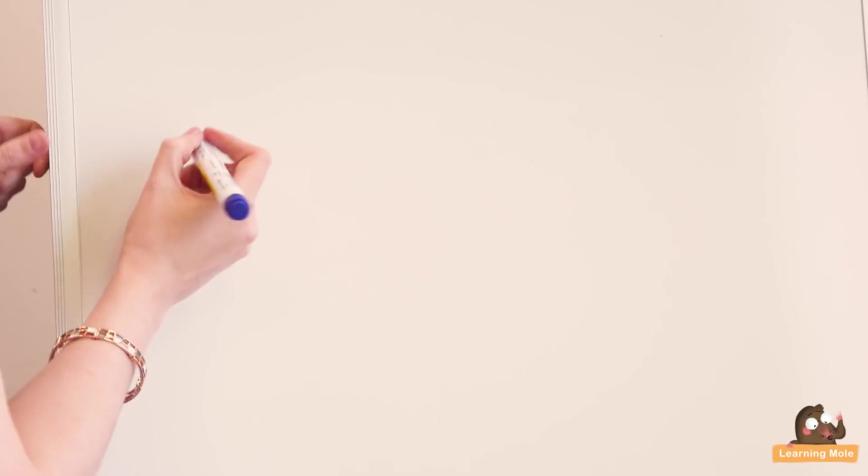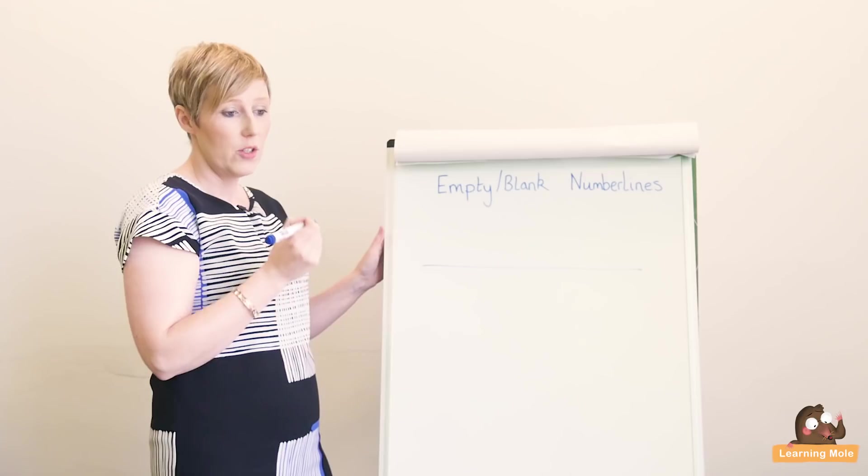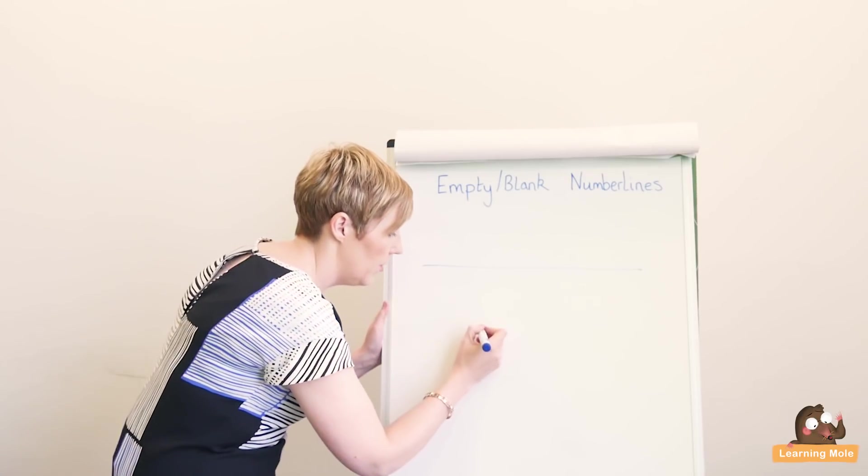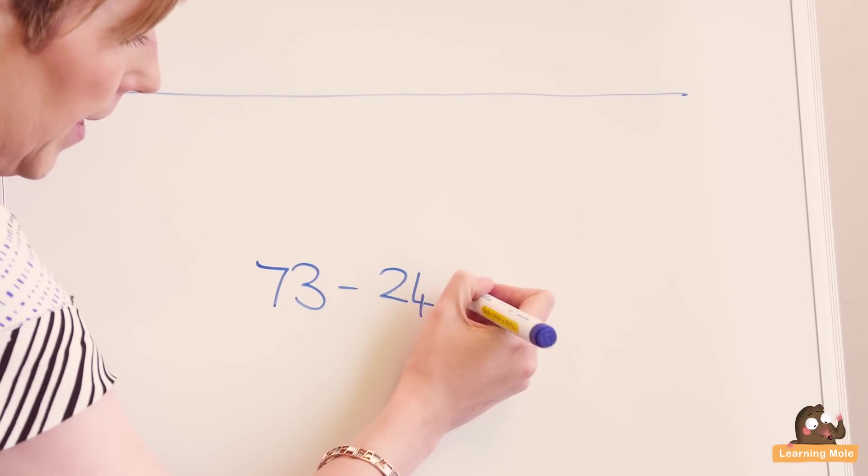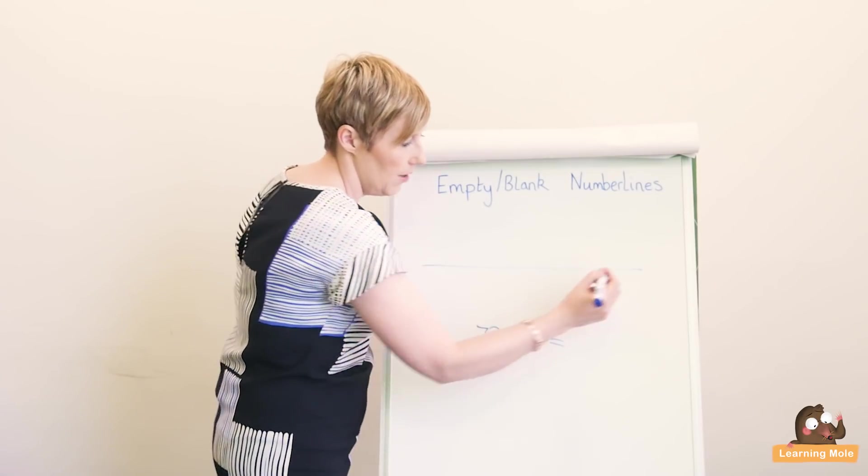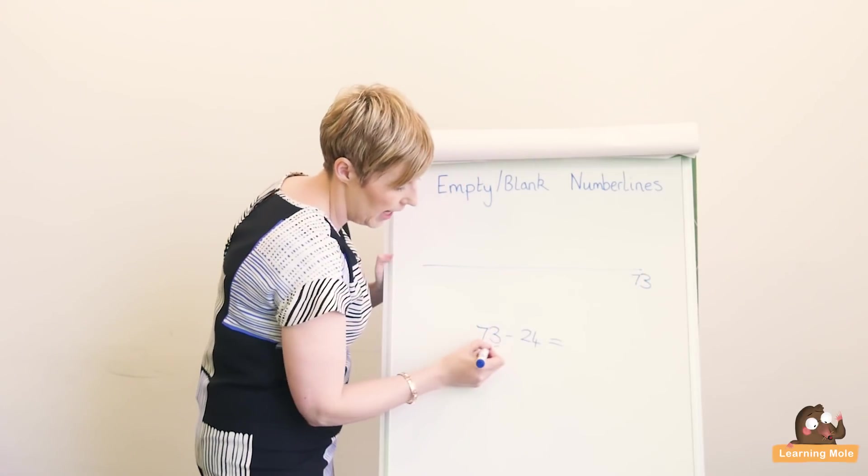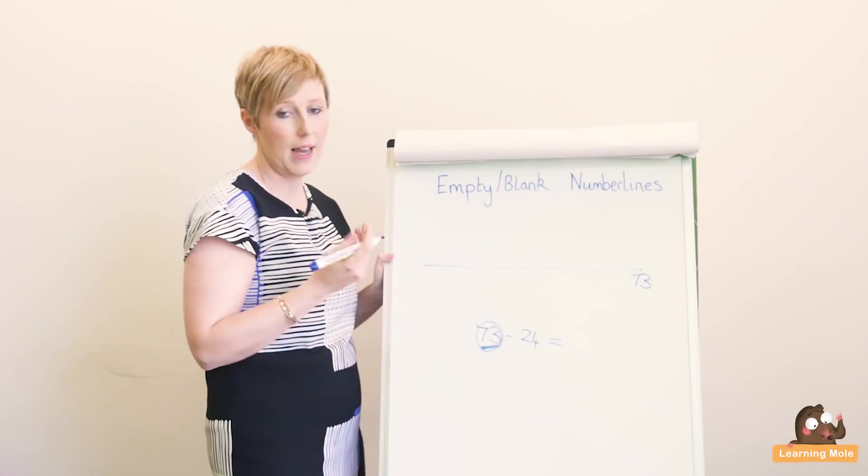So this time I'm going to do 73 take away 24. So I put my 73 up, underline it or circle it or something to say I've done it.